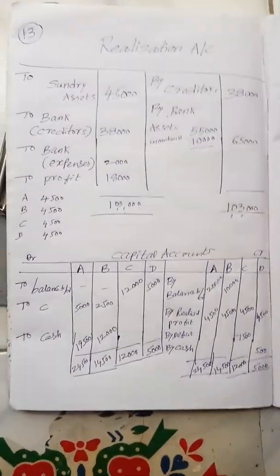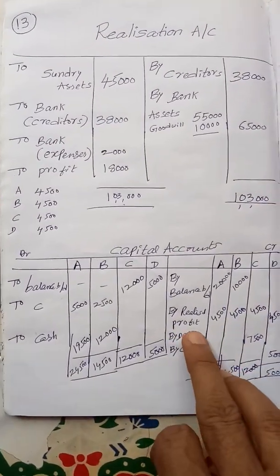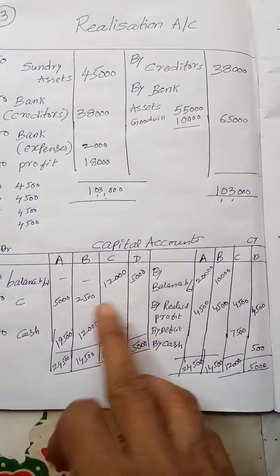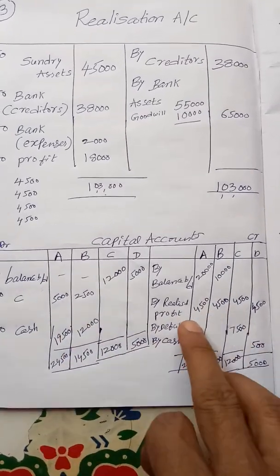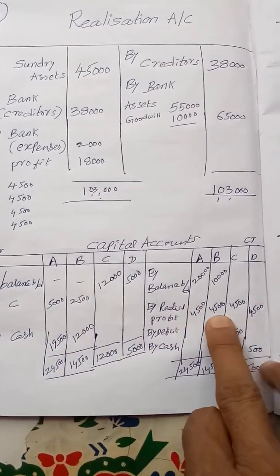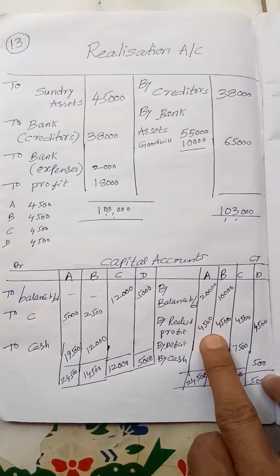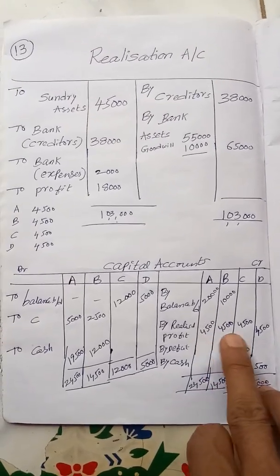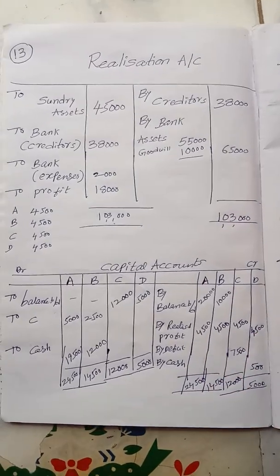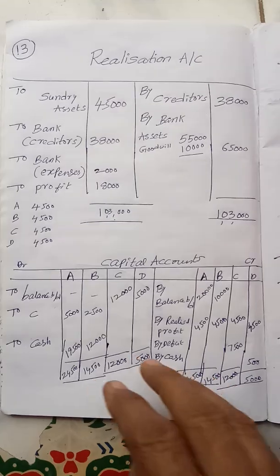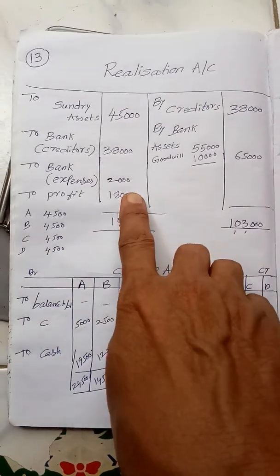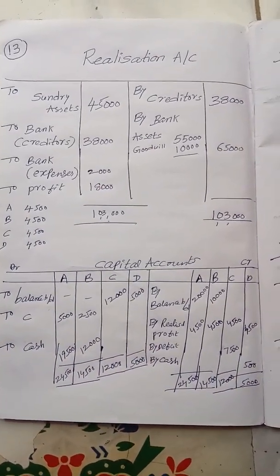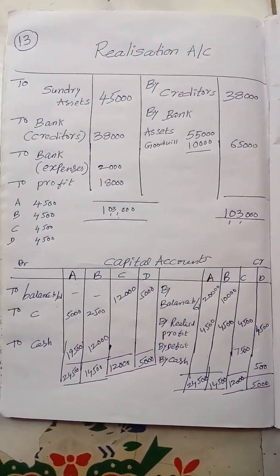The realization profit is shared among equal partners — ₹4,000 each, totaling ₹18,000 profit. Students, this is an important problem to understand in the context of insolvency of a partner.